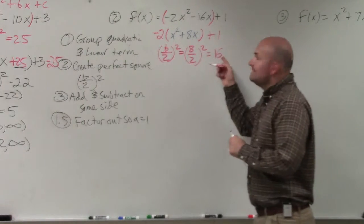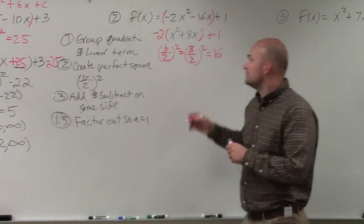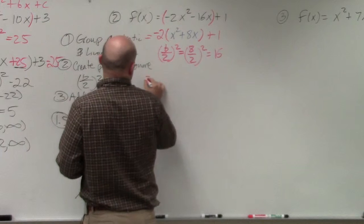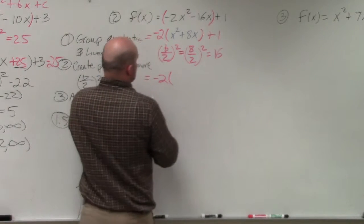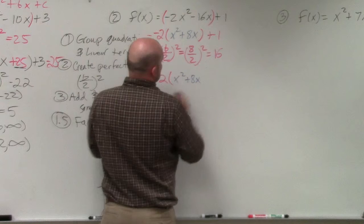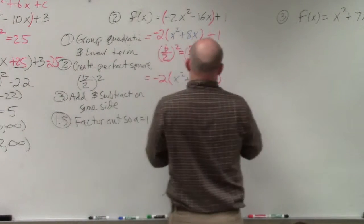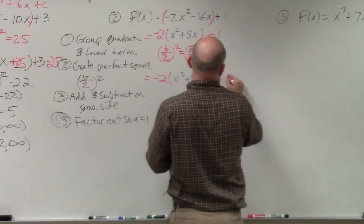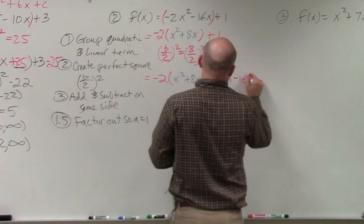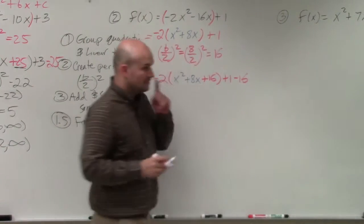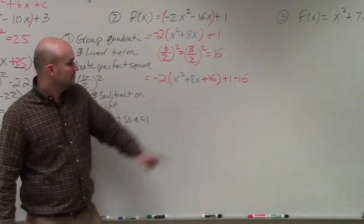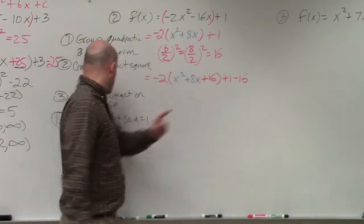So now 16 is my magic number I'm going to add inside there. So I have -2 times (x² + 8x + 16). Let's do plus 1 minus 16. Whatever you add, you have to subtract. Right, whatever you add, you have to subtract.